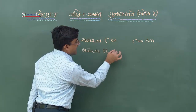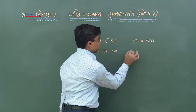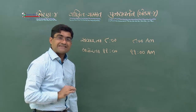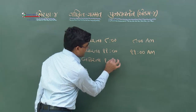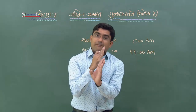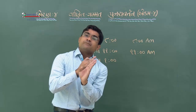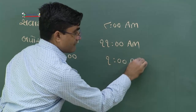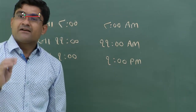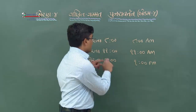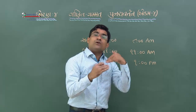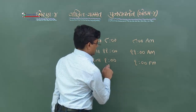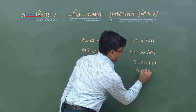બપોરે 1 વાગ્યે = 1 PM. ચોવિસ કલાક ઘડ્યારમાં - 12 PM પછી 13, 14, 15 ... ઓ ગણ્યા. સ્પષ્ટ છે ને? બપોરના 1 = 13 કલાક, 1 PM. બપોરના 4 = 4 PM, 24 ઘડ્યાર = 12+4 = 16 કલાક.